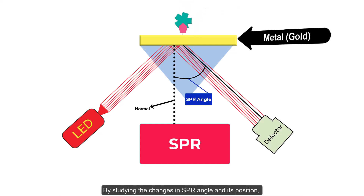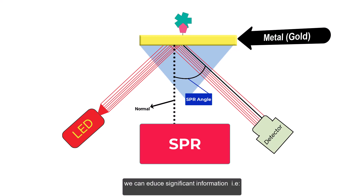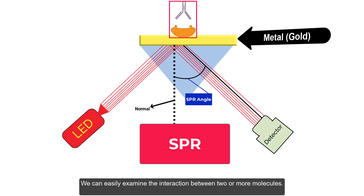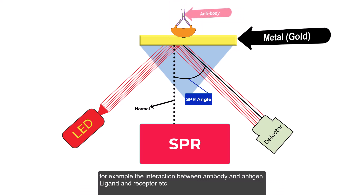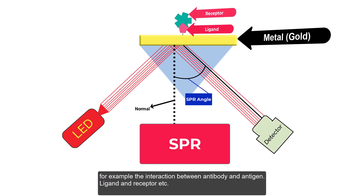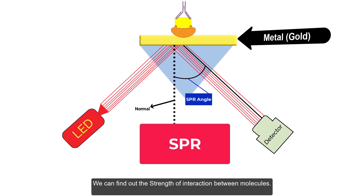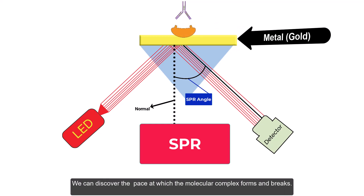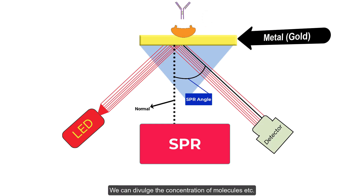By studying the changes in SPR angle and its position, we can derive significant information. We can easily examine the interaction between two or more molecules — for example, the interaction between antibody and antigen, or ligand and receptor. We can find out the strength of interaction between molecules, discover the pace at which the molecular complex forms and breaks, and determine the concentration of molecules.